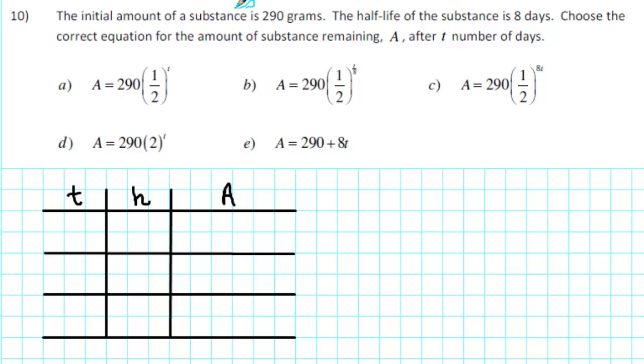Now we're given that the initial amount of a substance is 290 grams. That means that when time is equal to 0, the amount is 290. When time is equal to 0, the number of half-lives is also 0. The amount is 290 grams.